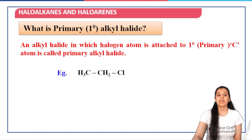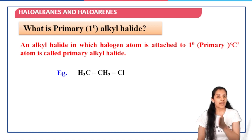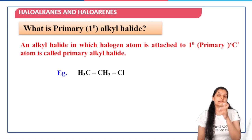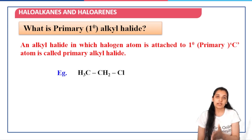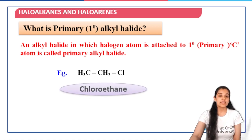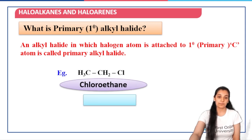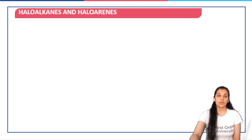For example, if we have CH3CH2Cl, the carbon atom to which the halogen is attached is known as the primary carbon — it is attached to just one other carbon atom. As we can see in this example, chloroethane, which is also commonly known as ethyl chloride, is a primary alkyl halide.